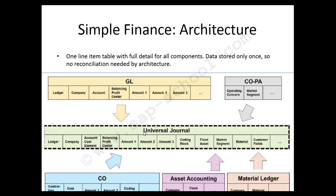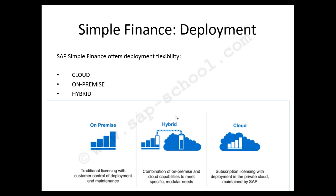This single source uses one line item table. We can see that this one line item table has all the information of all the components, which includes GL, COPA, CO, asset accounting, and the material ledger. So now we have a single line item table with full details for all the components.